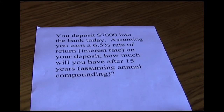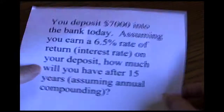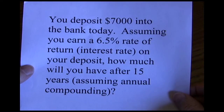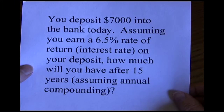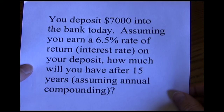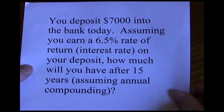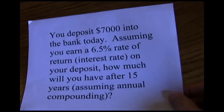This video is going to walk through a couple of time value of money problems using the five key approach to get you comfortable with your financial calculator. First problem: you deposit $7,000 into the bank today. Assuming you earn a 6.5% rate of return on your deposit, how much are you going to have after 15 years assuming annual compounding?